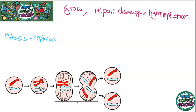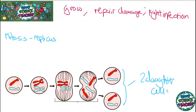You make two daughter cells, as you can see down here. This is showing mitosis — you make two daughter cells from one parent cell. So let's look at the stages of mitosis. Here you can see that the cell makes a replica of itself.